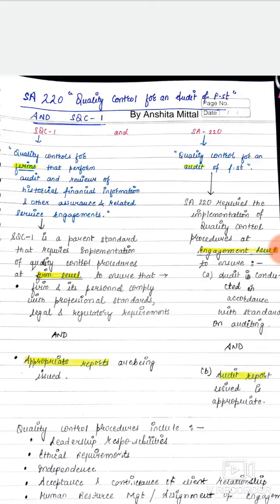As the name suggests, SQC1 applies to the entire firm — what quality control procedures apply within the firm, how quality controls need to be maintained, whether the firm is doing financial statements audit or engaged in any other type of assurance engagement. Whereas SA220 is for the audit of financial statements — particularly, when auditing a company's financial statements, what quality control needs to be maintained is given in SA220.